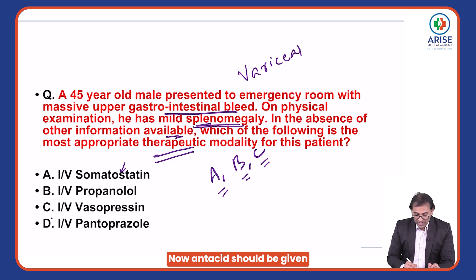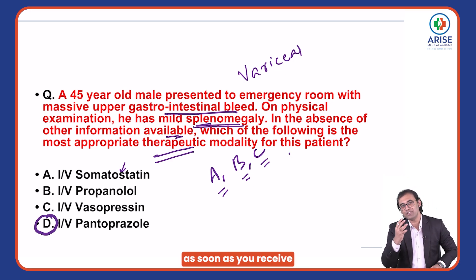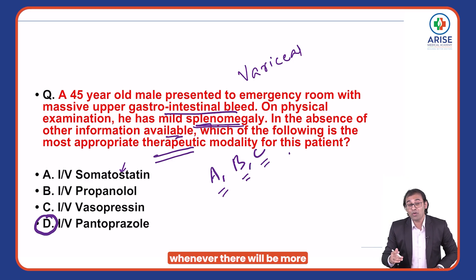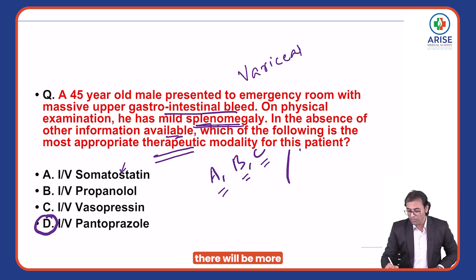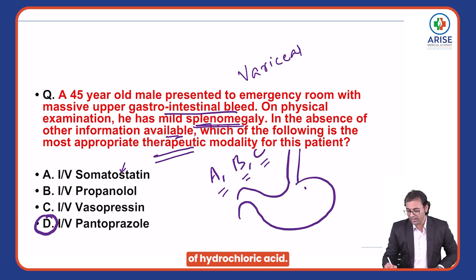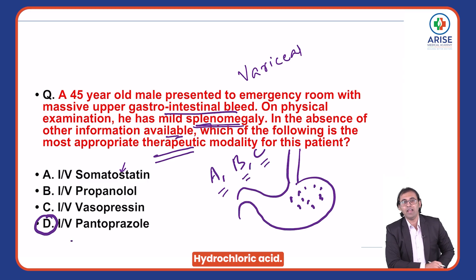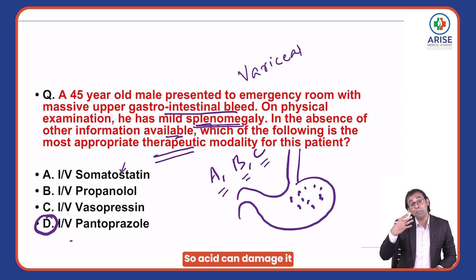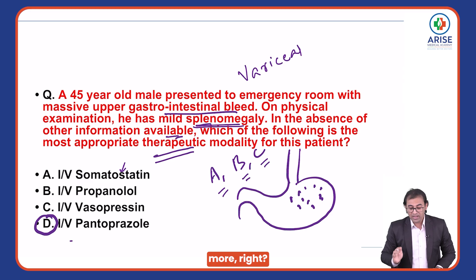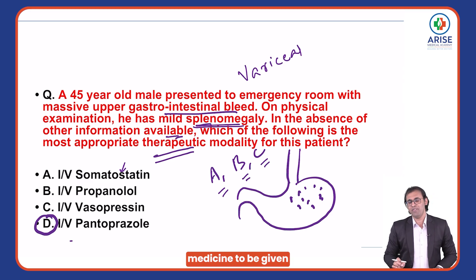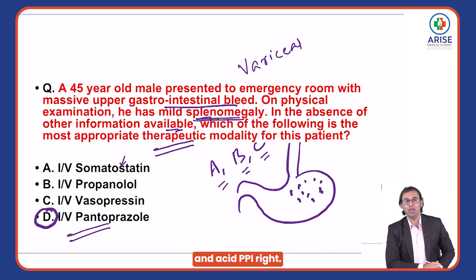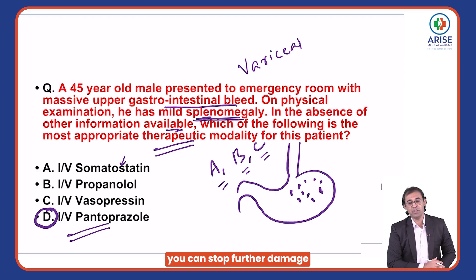Antacid should be given as soon as possible — as soon as you receive the patient in hospital — because whenever there will be upper GI bleed, whenever there will be more stress, there will be more and more secretion of hydrochloric acid. Whenever there will be more release of acid and the patient was having upper GI bleed, the acid can damage it more. So the first medicine to be given, out of the four options, is antacid — PPI — so that you can stop further damage.